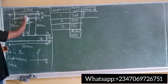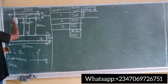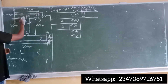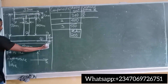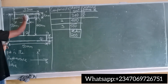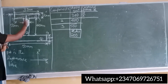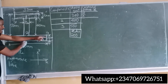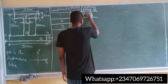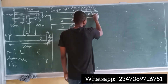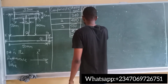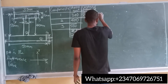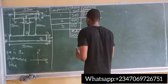So the centroid distance X for segment one is 30 divided by 2, plus 40, plus 10. That gives 15 plus 40 plus 10, which equals 65 millimeters.